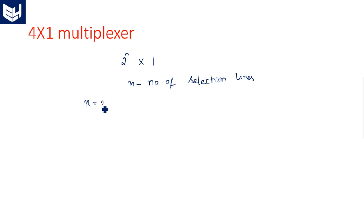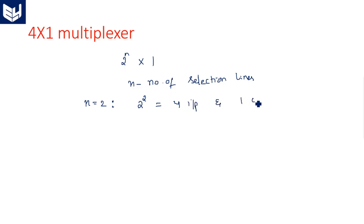For n equals 2, there are 2 selection lines, giving 2 power 2 which equals 4 inputs and always one output. For any multiplexer, no matter the number of inputs, the output is always 1.